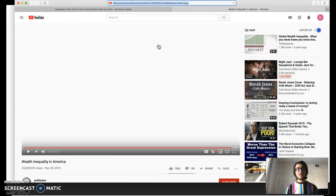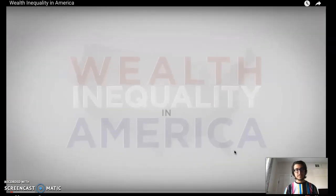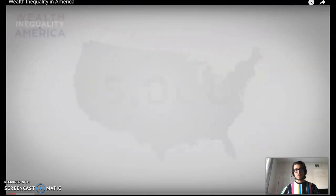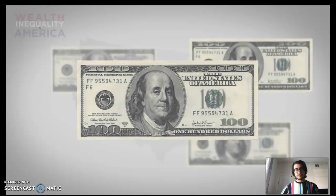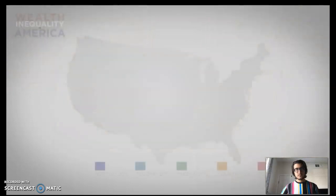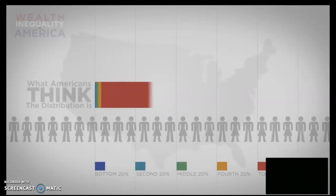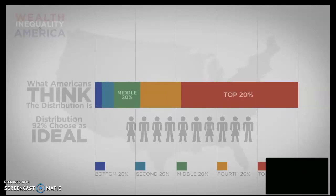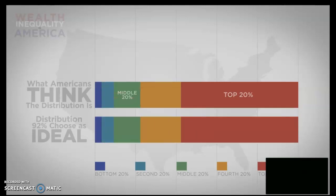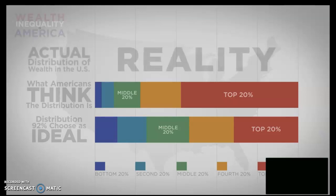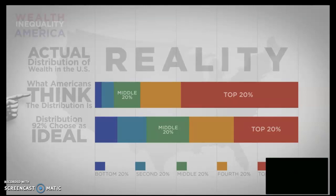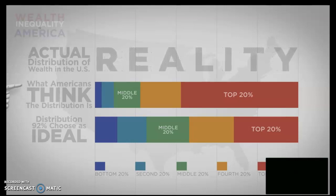We're going to watch a video clip that does a good job further explaining this disparity. A Harvard business professor and economist asked more than 5,000 Americans how they thought wealth was distributed in the United States. Dividing the country into five rough groups — the top, bottom, and middle three 20% groups — he asked how they thought wealth was divided, and then what they thought the ideal distribution would be. 92% — at least nine out of ten — said it should be more equitable than they think it is. What's most interesting is the reality compared to our perception: the ideal is as far removed from our perception of reality as the actual distribution is from what we think exists.